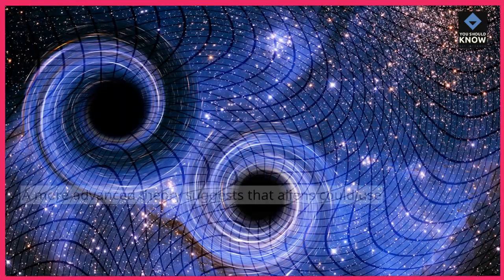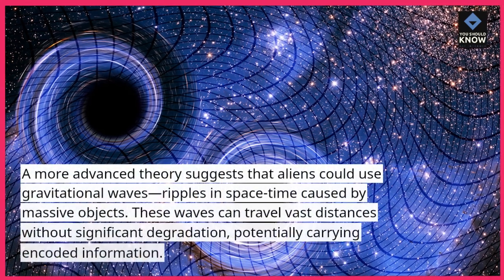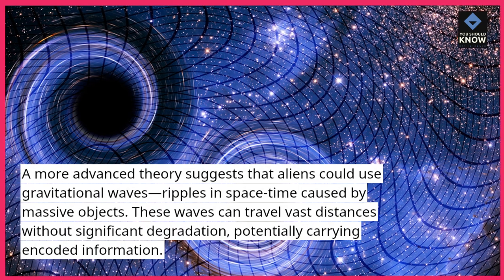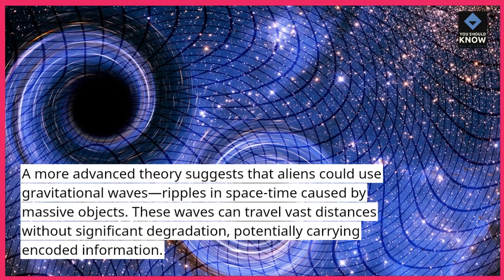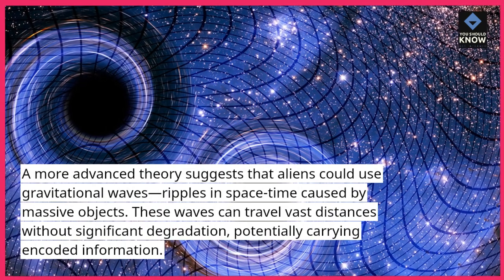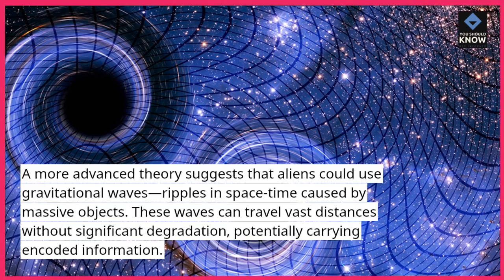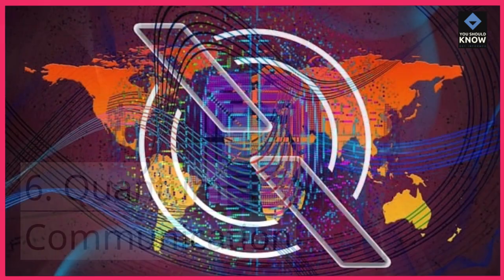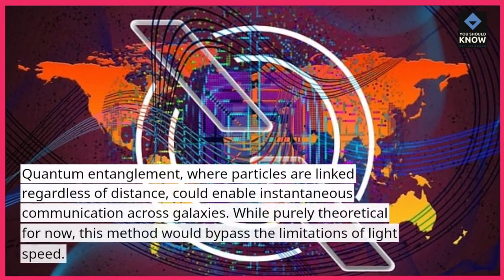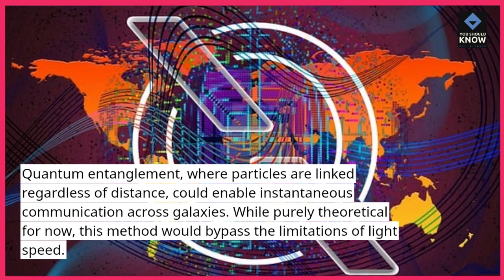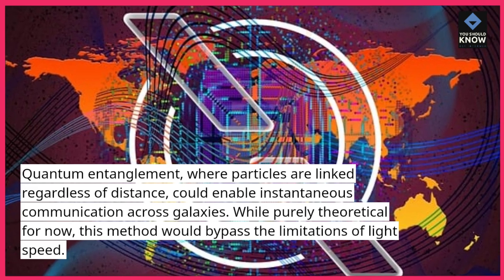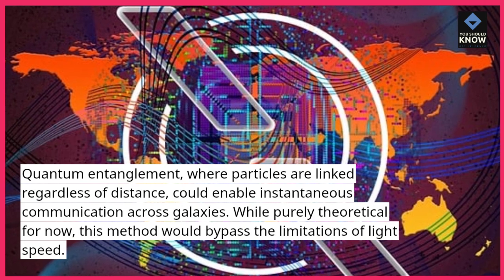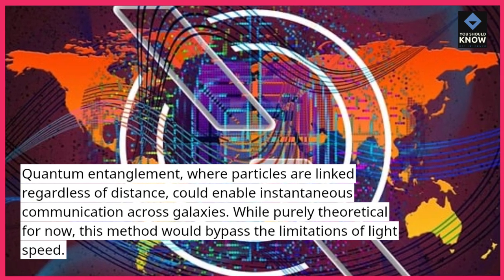Gravitational Waves: A more advanced theory suggests that aliens could use gravitational waves — ripples in space-time caused by massive objects. These waves can travel vast distances without significant degradation, potentially carrying encoded information. Quantum Communication: Quantum entanglement, where particles are linked regardless of distance, could enable instantaneous communication across galaxies. While purely theoretical for now, this method would bypass the limitations of light speed.